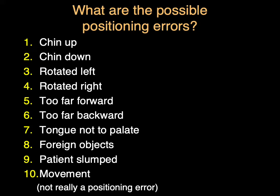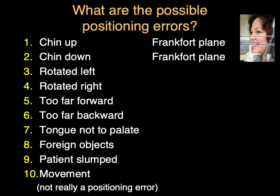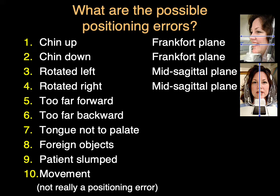So what are the possible errors that can happen? The chin could be too far up or too far down, and both of these are a result of the Frankfurt plane. The Frankfurt plane goes from the top of the ear canal to the bottom of the eye socket, and we want this roughly parallel with the floor. The patient could be rotated left or right, which is a problem with the mid-sagittal plane. We want the patient to be upright and centered, and most machines have a light that helps you line this up, whether the light is midline or on the canine, to make sure the patient's in the correct position.